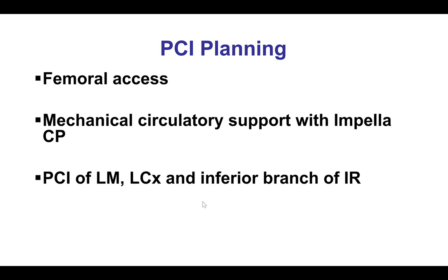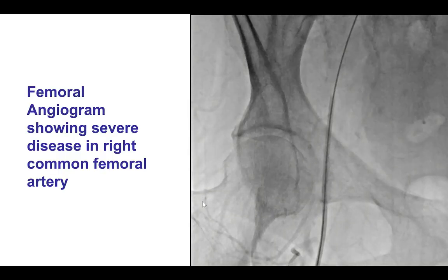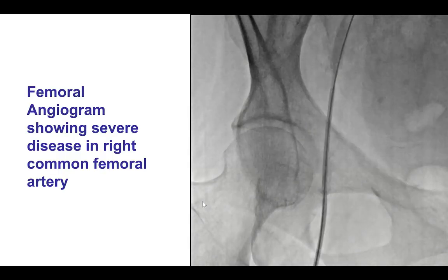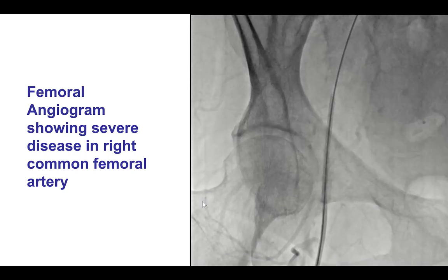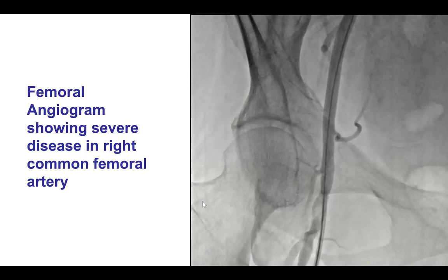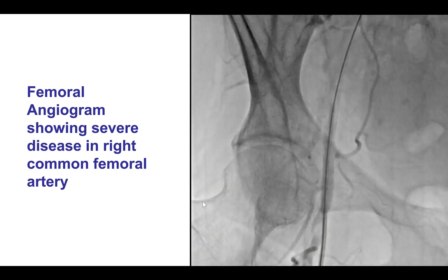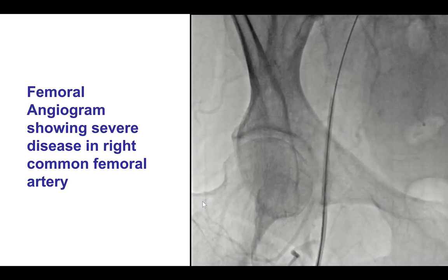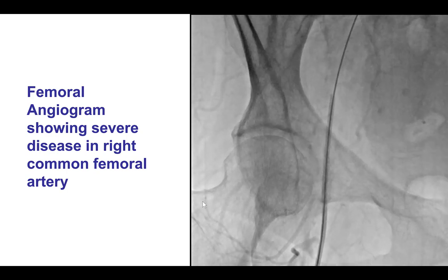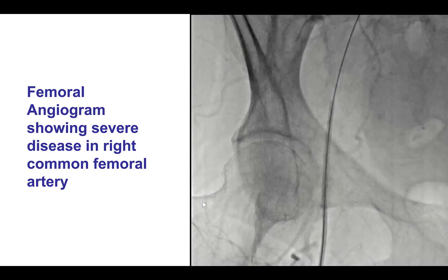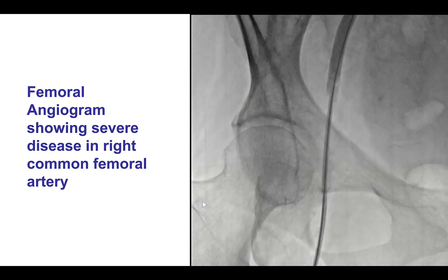Our initial plan was to use hemodynamic support prophylactically using an Impella-CP device. However, upon obtaining access, there was significant disease in both the right and left common femoral arteries. Additionally, his wedge pressure was normal at 15, so we decided to perform this case with standby hemodynamic support.